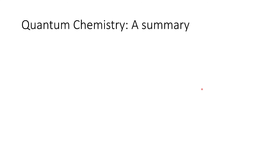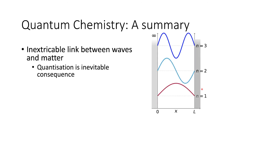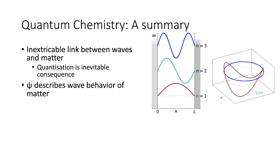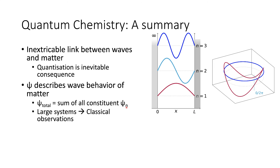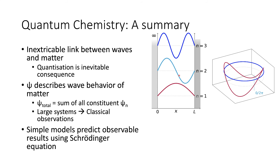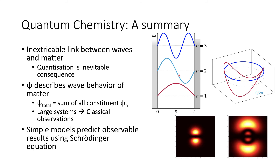To summarize the course: we've shown there's an inextricable link between waves and matter, and this has led to quantization. With our particle in the box and its boundary conditions, we force quantization of energies. The wave function fundamentally describes the wave behavior of matter — whether kinetic energy in a box or rotational energy of a rotating particle — and the overall wave function is the sum of all constituent wave functions. When a system becomes sufficiently large, we start to see classical observations — classical physics has a continuum of energies, but quantum mechanics forces quantization. Using very simple models, we've been able to predict observable results using the Schrödinger equation.